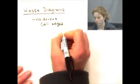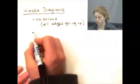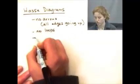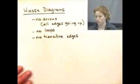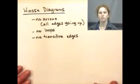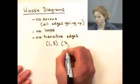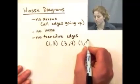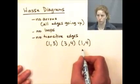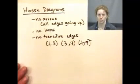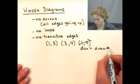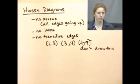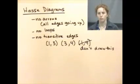All edges go upward, so we know which way the arrows go — no loops and no transitive edges. When I say no transitive edges: if I have 1→3 and 3→4, then 1→4 has to be in the relation because it's a partially ordered set, but we don't draw it in the Hasse diagram. We can use these diagrams to find minimal and maximal elements, and it makes the relationships much easier to understand.